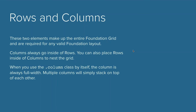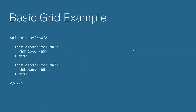Rows and columns make up the entire Foundation grid and are required for any valid Foundation layout. Columns always go inside of rows. You can also place rows inside of columns to nest the grid — we'll cover nesting more in a moment. When you use the column class by itself, the column is always full width, so multiple columns will simply stack on top of each other.